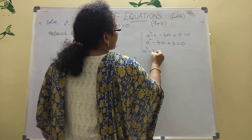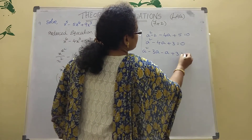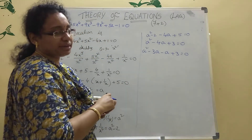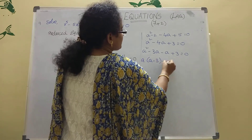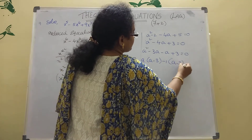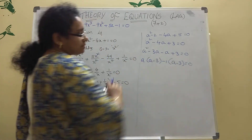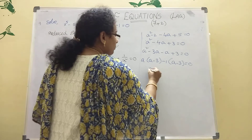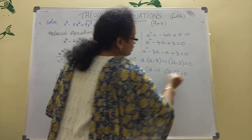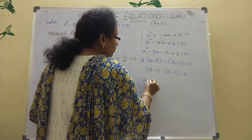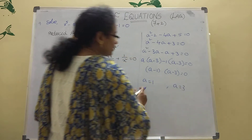Now factorize: a^2 - 3a - a + 3 = 0. Then a(a - 3) - 1(a - 3) = 0, giving (a - 1)(a - 3) = 0. So if a = 1 or a = 3.